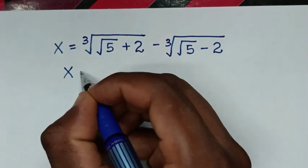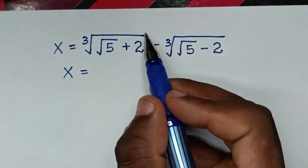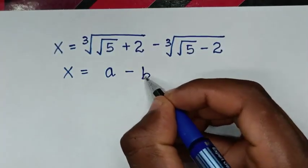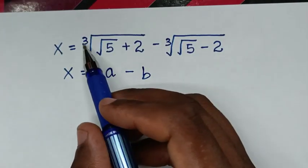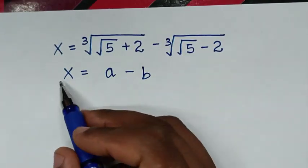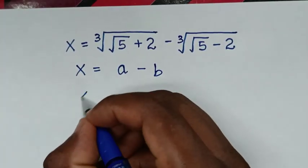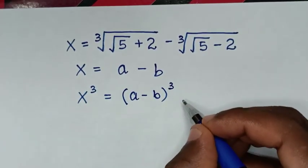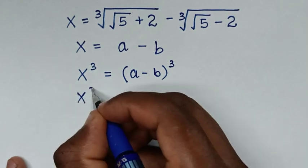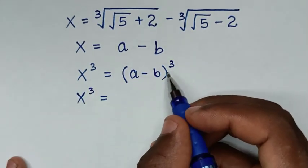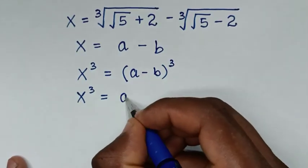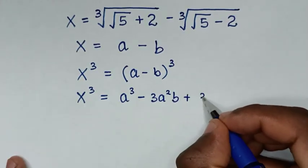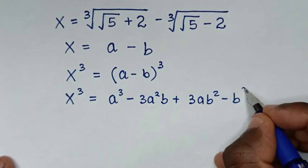In the next step, we let this first cube root be a and the second cube root be b, so x equals a minus b. Because we have a cube root, we will raise both sides to the power of 3. So x cubed equals (a minus b) cubed, which expands to a cubed minus 3a squared b plus 3ab squared minus b cubed.